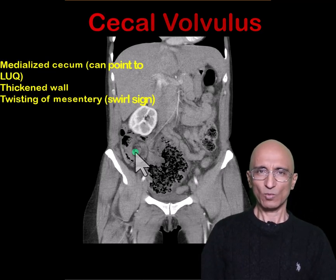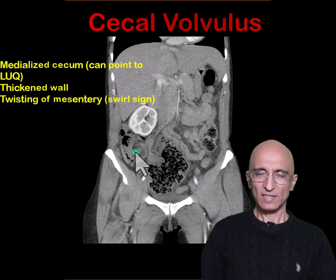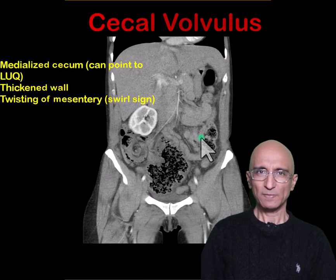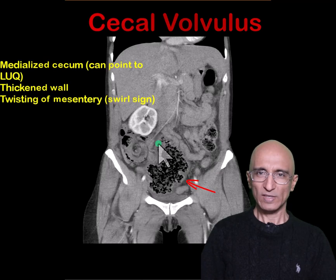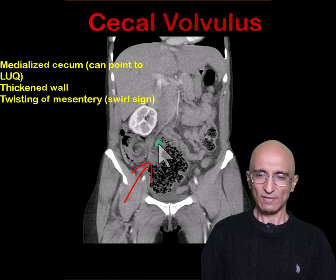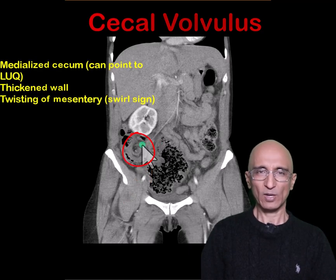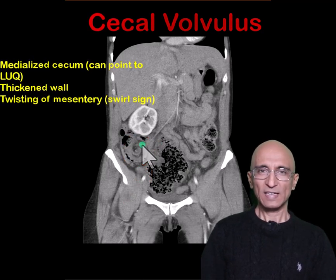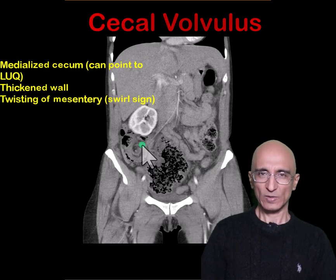To summarize: in cecal volvulus, the cecum is abnormally located. In some patients, the cecum can be very dilated and can point towards the left upper quadrant of the abdomen. Whenever you find the cecum is medialized, always check if the wall of the cecum is thickened. Also look at the orientation of the ileocecal valve and for any twisting of the mesentery, because in some patients the cecum can have a redundant mesentery but without wall thickening or twisting of the mesentery.